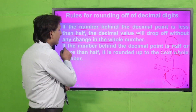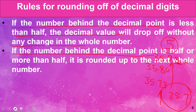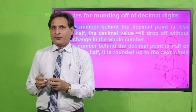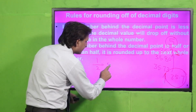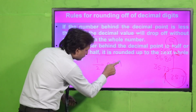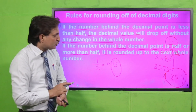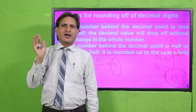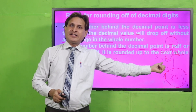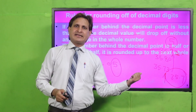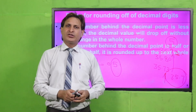अब second rule: If the number behind the decimal point is half or more than half, it is rounded up to the next whole number. Half का मतलब क्या है? 1/2, this is half। जब इसको half करेंगे — 0.5। Figure कौन सी आई? 5 की। So digit जो 5 है यह आपने दिमाग में रखना है। उसके बाद वाला digit देख लेना है कि वो 5 है या 5 से greater है, तो पहले वाले में 1 add कर देना है। अगर less है तो add नहीं करना, as it is छोड़ देना है।